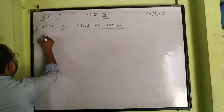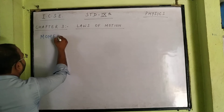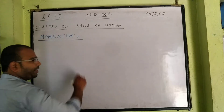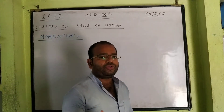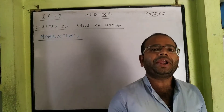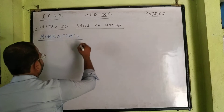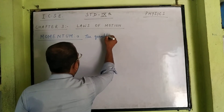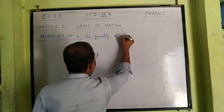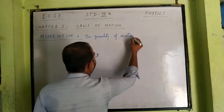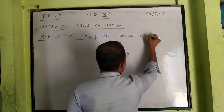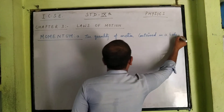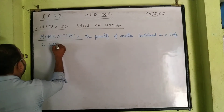Momentum is defined as the amount of motion — the quantity of motion contained in a body. So the definition of momentum is the quantity of motion contained in a body.